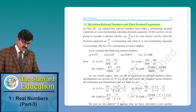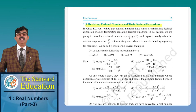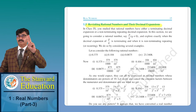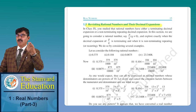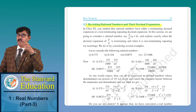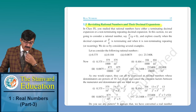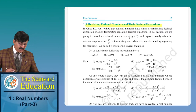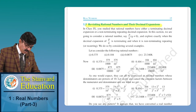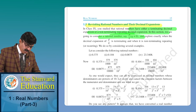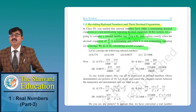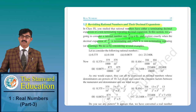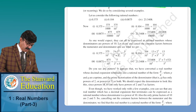Revisiting rational numbers: decimal expansion of rational numbers is of two kinds — terminating and non-terminating recurring. Now we will see how to determine from P by Q whether the decimal is terminating or non-terminating. If the denominator Q can be expressed in the form 2^n × 5^m, the decimal is terminating.